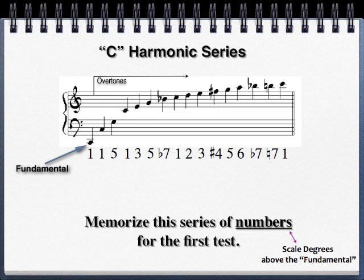This example shows the first sixteen partials of the C overtone series, but it could start on any note — it could start on an F overtone series, and then we'd hear F, F, C, F, E-flat, and so on. The partials get closer together as they get higher. We stop at the sixteenth partial because that's as high as our notation system is equipped — above that the notes are closer than a half step apart, and our notation normally goes no closer than a half step.